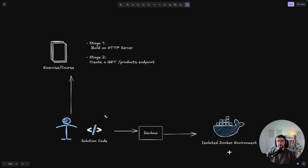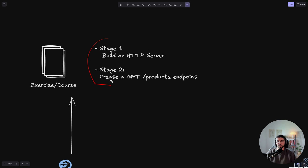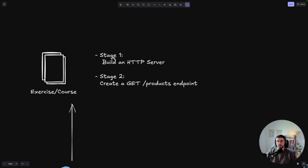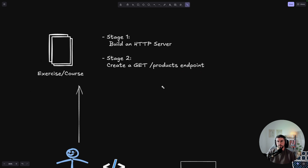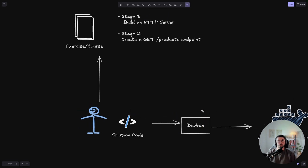You can load an exercise — for example, there's stage one and stage two: create an HTTP server, and then create a handler or endpoint to get products. Basically the job of DevBox is to make sure you've implemented the correct solution. It runs some tests against your solution and gives you feedback.